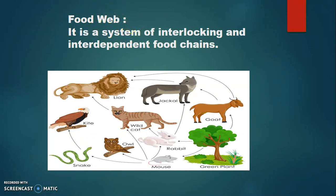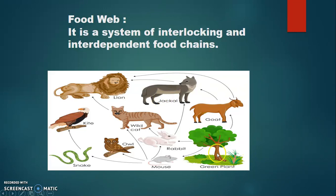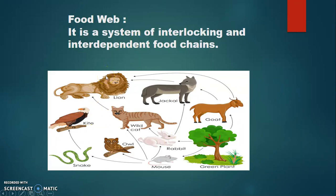Our next topic of discussion is food web. Food web is basically the interconnection between organisms — a system of interlocking and interdependent food chains. When many food chains are interconnected, they form a food web. In this diagram, starting from green plants as autotrophs, goat, rabbit, and mouse all depend on green plants. Then goat to jackal to lion, rabbit to wild cat, mouse to owl, snake to kite — they are all interdependent and interconnected. Food chain is always linear, but food web is not linear; it may be complex, interlocked, or interdependent.